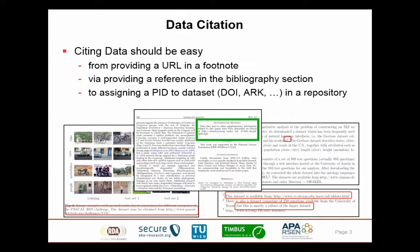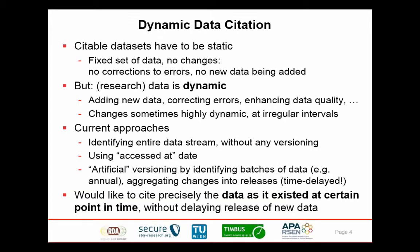Citing data should basically be easy, from the old-fashioned way of simply providing a URL to a data set, to providing a reference in a bibliography section, to professionally assigning a persistent identifier and depositing the data in a repository. The issue our working group wants to address is that currently the data sets we can cite basically have to be static ones. A data set is generated, uploaded into a repository, and you can cite it as it is. As soon as you want to correct errors, add new data, or deal with dynamic streaming data, these different states cannot be easily identified and cited.